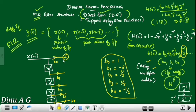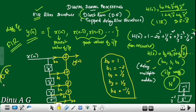Let's add the adder here, with the input going into the adder. The output is y(n). This represents the direct form structure of the FIR filter, also called the Tapped Delay Line Structure.